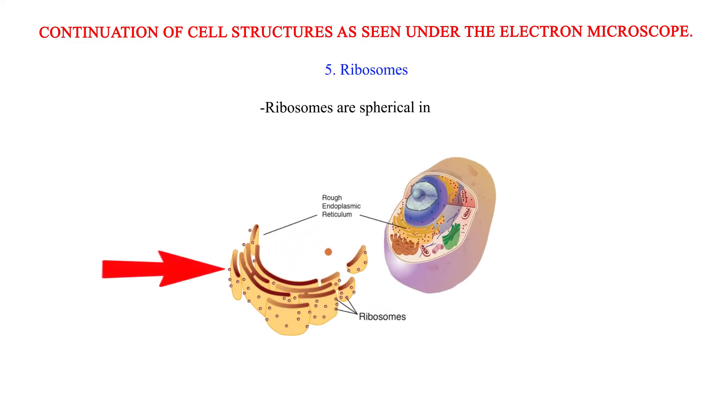Continuation of cell structures as seen under the electron microscope. 5. Ribosomes. Ribosomes are spherical in shape.